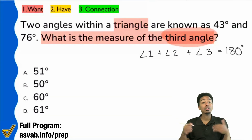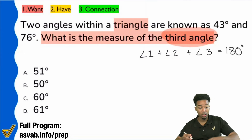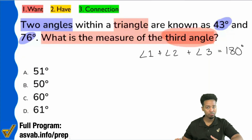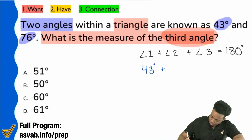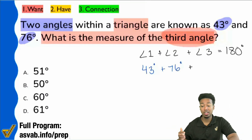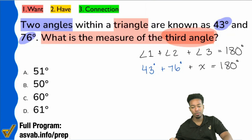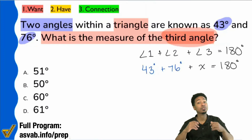Good. Now here's what we'll do — we have this mathematical fact that applies to this problem, and we're going to take the information we have and plug it in. We know that two of the angles inside the triangle are 43 degrees and 76 degrees. So I'll write in: 43 degrees plus 76 degrees plus x equals 180. Before I continue — we identified the formula and we've now successfully plugged in what we have.